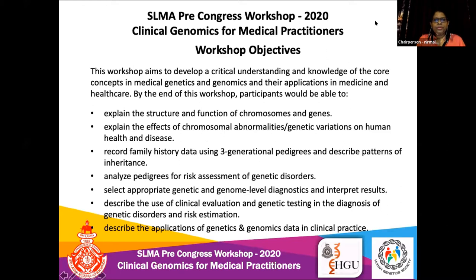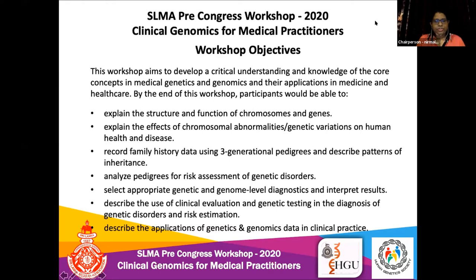By the end of this workshop, participants would be able to explain the structure and function of chromosomes and genes, explain the effect of chromosomal abnormalities and genetic variations on human health and disease, record family history data using three generational pedigrees and describe patterns of inheritance, analyze pedigrees for risk assessment of genetic disorders, select appropriate genetic and genome level diagnostics and interpret results, and describe the use of clinical evaluation and genetic testing in the diagnosis of genetic disorders and risk estimation.